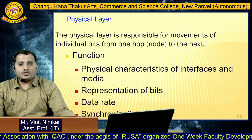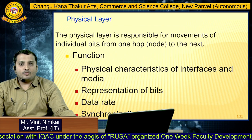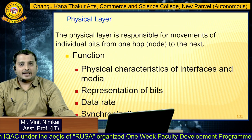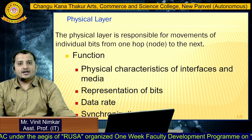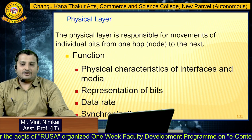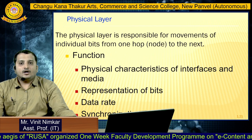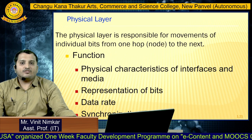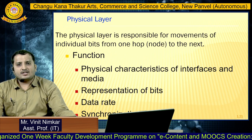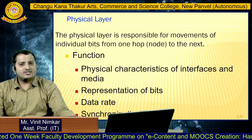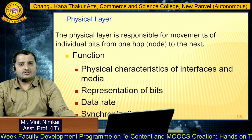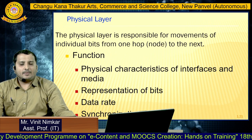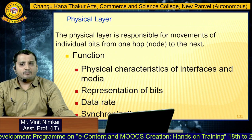The first layer is the physical layer. It is responsible for the movement of individual bits from one hop to the next hop — here 'hop' is the word used for a device. The physical layer is considered the movement of individual bits. Other functions include the physical characteristics of an interface or transmission medium and the representation of bits.